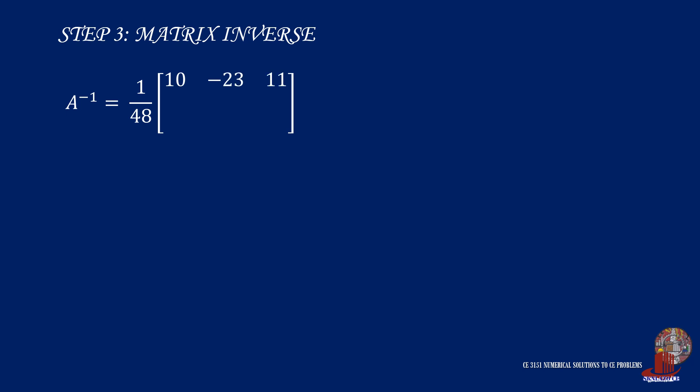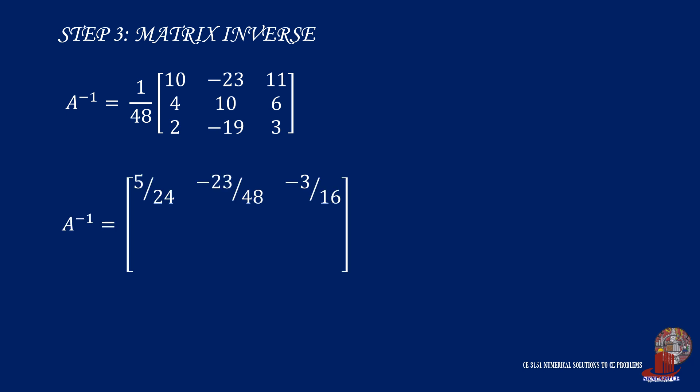Finally, we compute for the inverse by multiplying the reciprocal of the determinant with the adjoint of matrix A. This is done basically as dividing each element by 48, and having all the elements reduced to their simplest form.